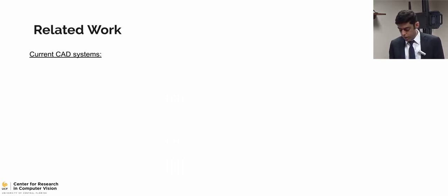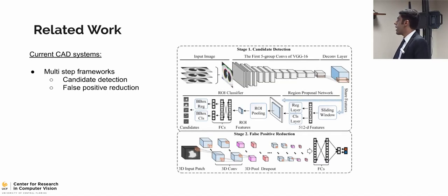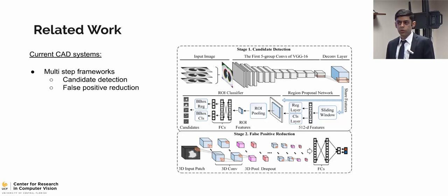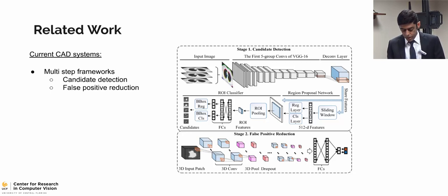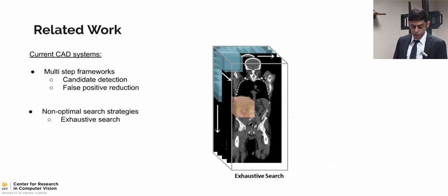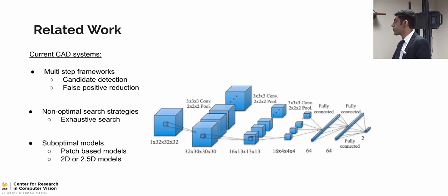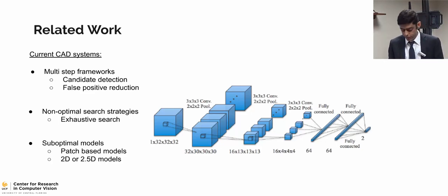The related work on lung nodule detection can be categorized into three main topics: first, multi-step frameworks with candidate detection and false positive reduction, because capturing tiny abnormalities is very difficult and multiple networks are normally needed. Second, non-optimal search strategies like exhaustive search or sub-optimal strategies. Third, sub-optimal models in terms of patch-based, 2D, or 2.5D models that don't fully capture the 3D context.